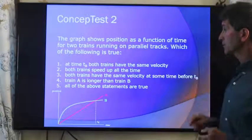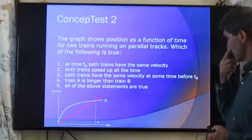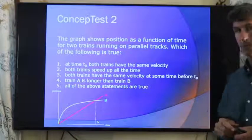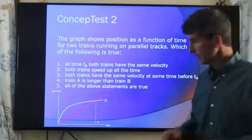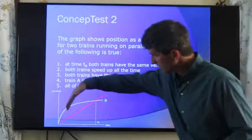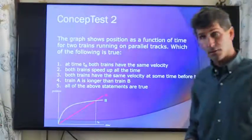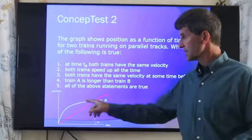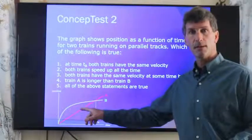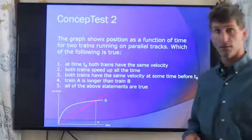Both trains have the same velocity at some point before TB. Here's the slope of A, fairly easy to see. Slope of B goes from here to here. So that's true. At some point, both will have the same slope as the function for B matches the slope for the function of A.